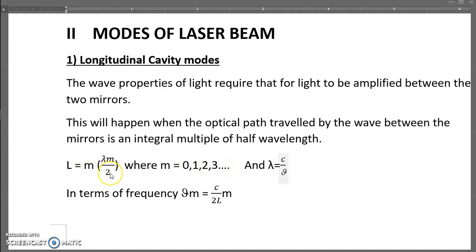Now we know that lambda equals C upon mu, where C is the velocity of light and mu is the frequency of the wave. After substituting this in the equation, we get the frequency as Vm = C/(2L) times the integer m.